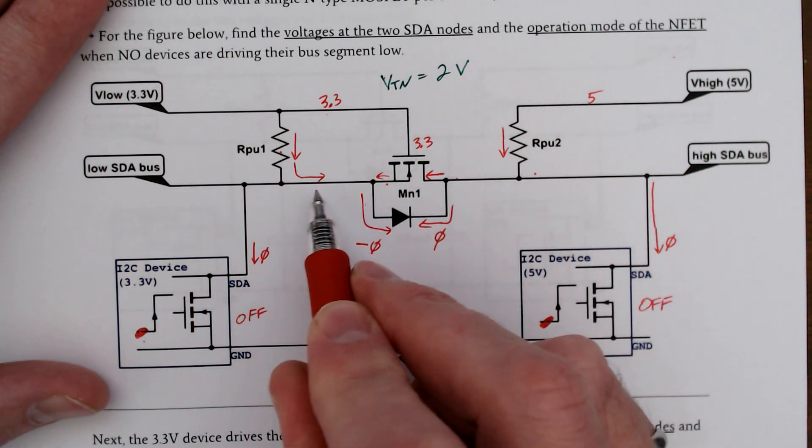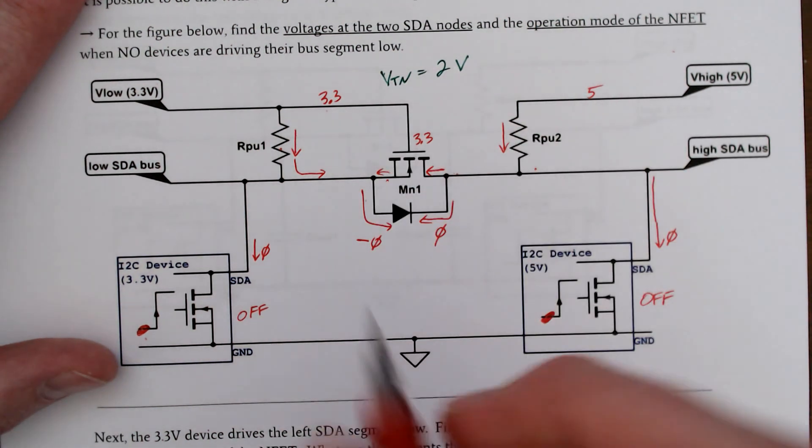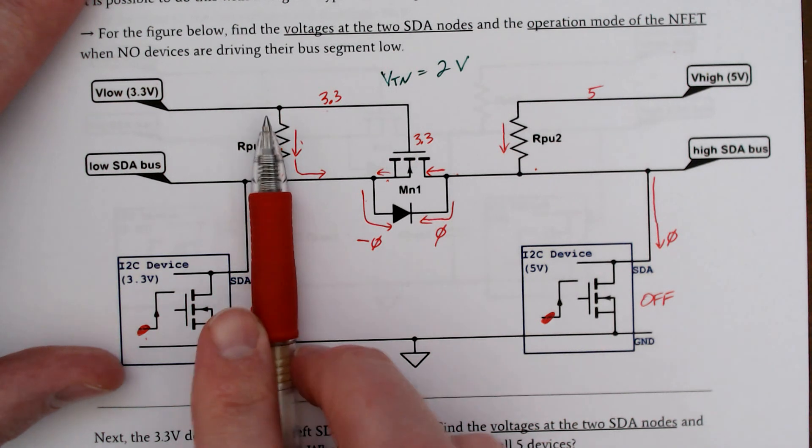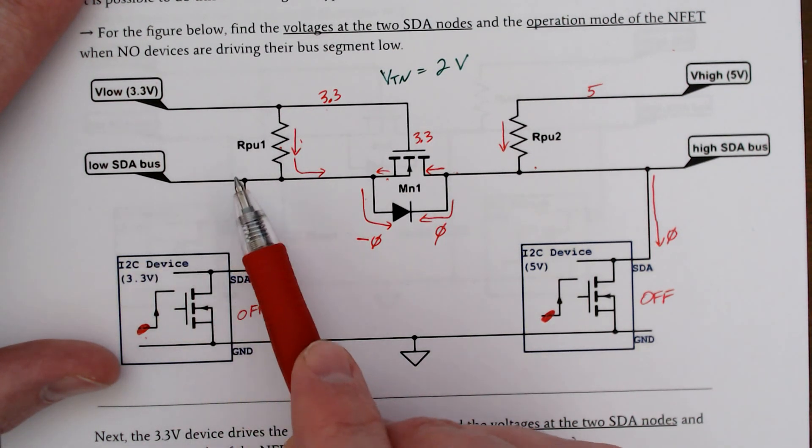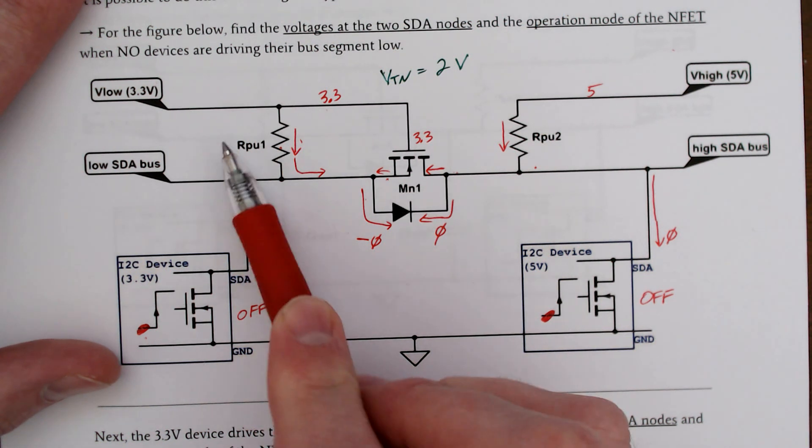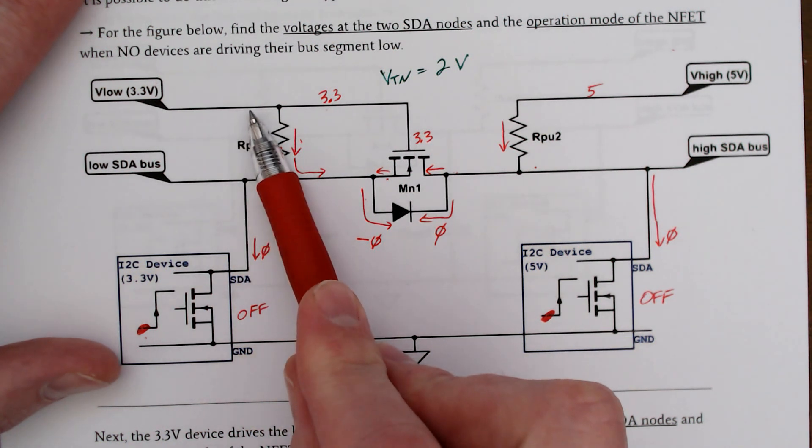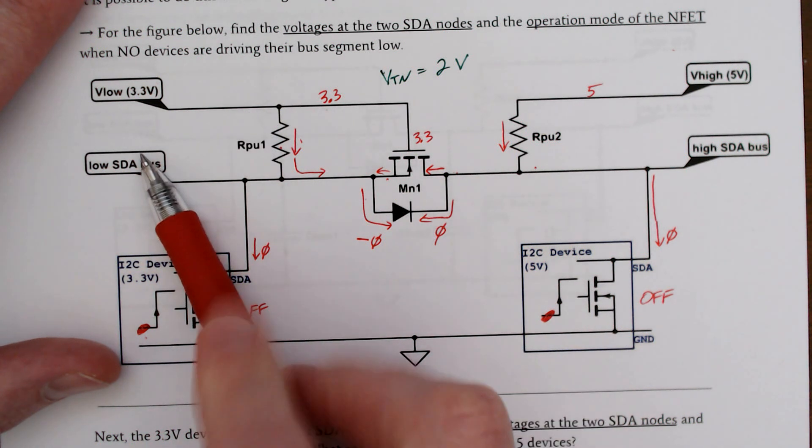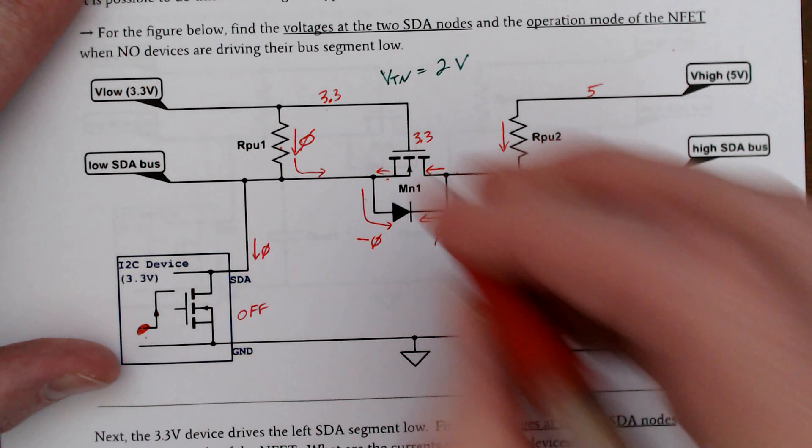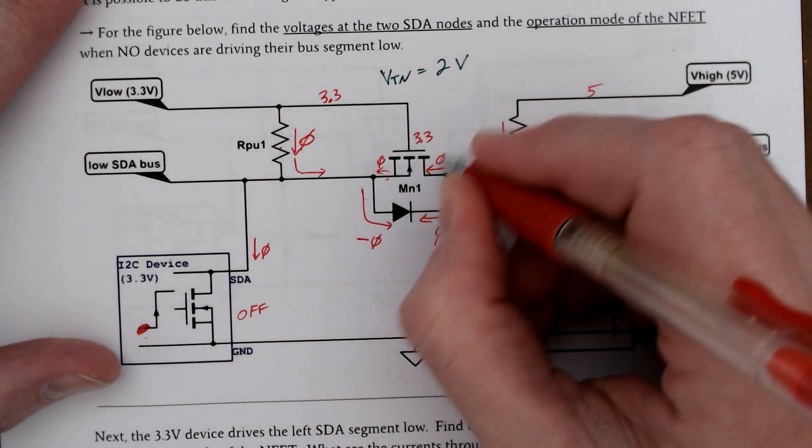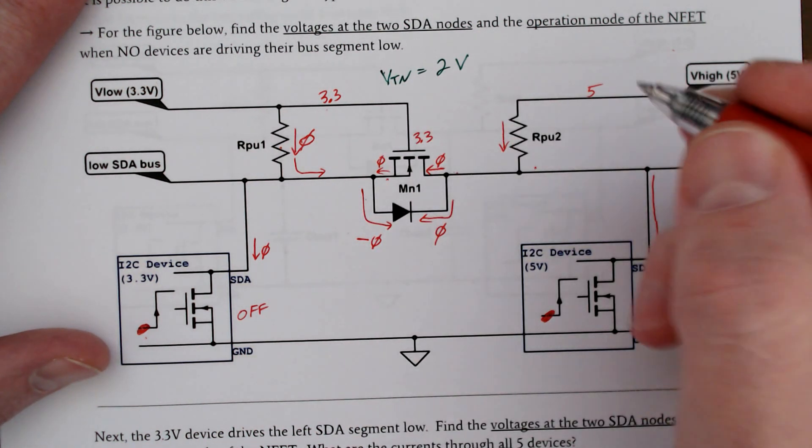They're going opposite directions, and we know that current's not going to be going up through this, otherwise we would have by Ohm's law a voltage on the low side of this SDA bus that was larger than 3.3 volts, which is the power supply for this circuit, so it's not going to happen.